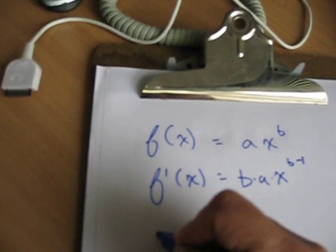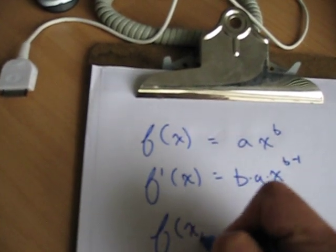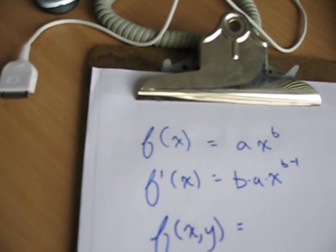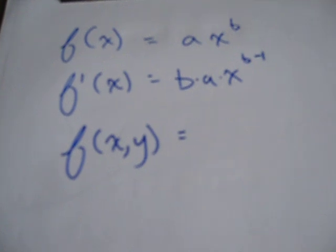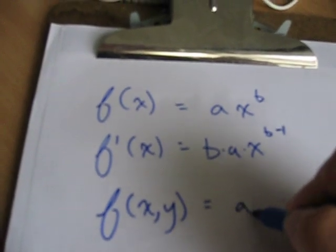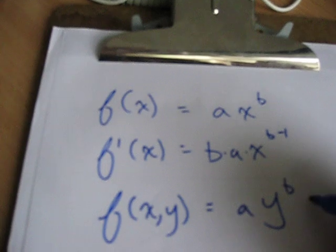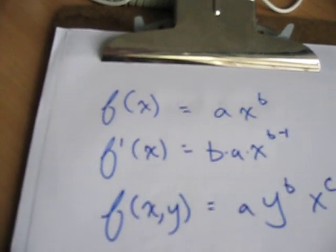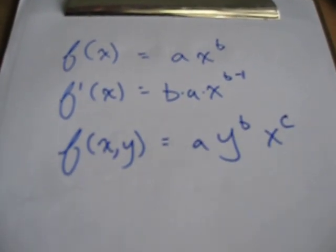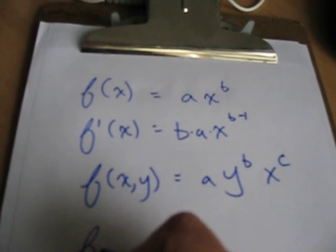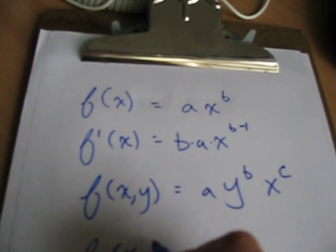Now, suppose you've got a function f of x and y. In particular Cobb-Douglas functions, you see this kind of stuff a lot. So you've got a y to the b power, x to the c power, and you want to take the derivative with respect to x. So, f sub x of x and y.